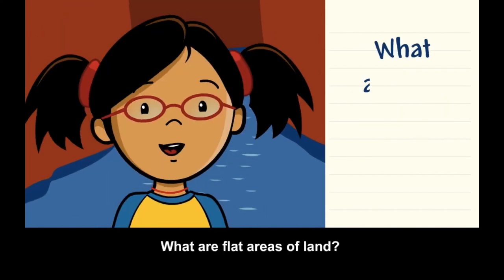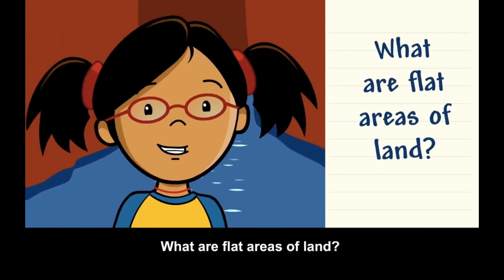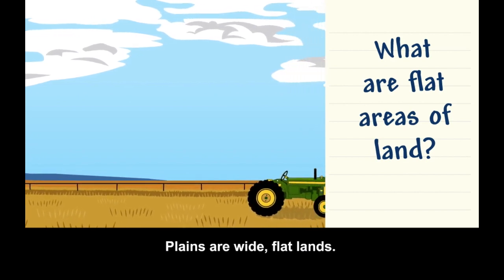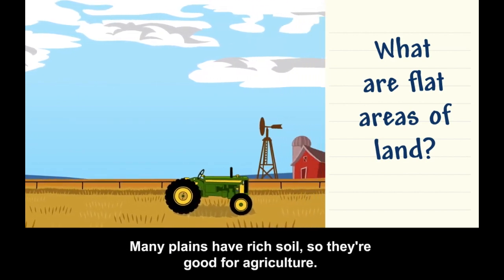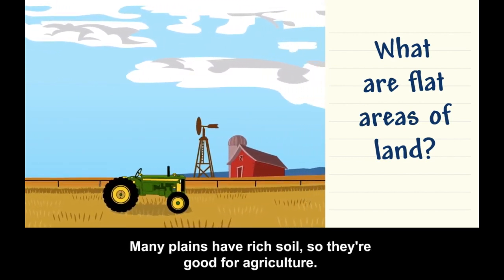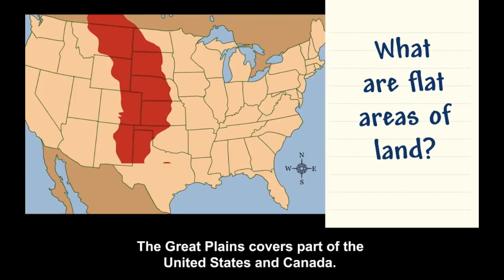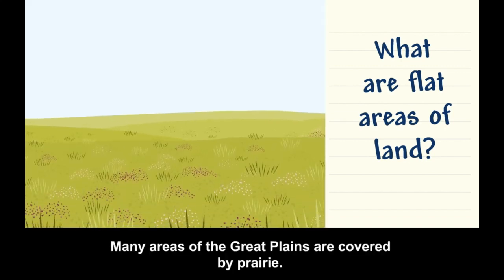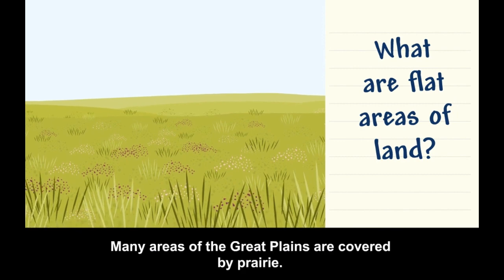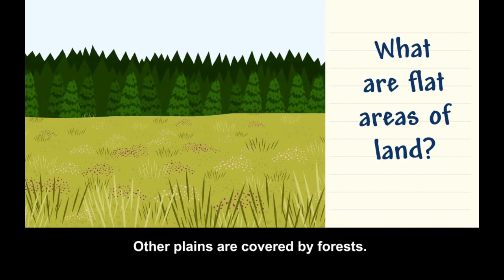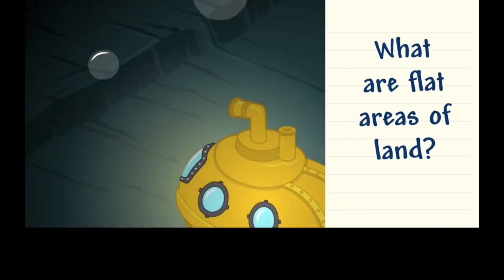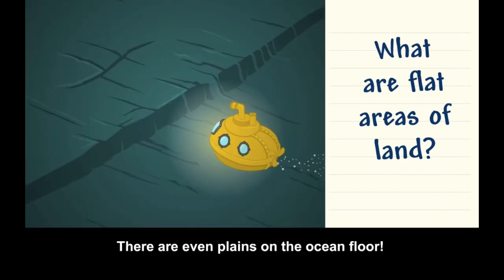What are flat areas of land? Plains are wide, flat lands. Many plains have rich soil, so they're good for agriculture. The Great Plains covers part of the United States and Canada. Many areas of the Great Plains are covered by prairie. A prairie is a grassy plain that has few or no trees. Other plains are covered by forests. There are even plains on the ocean floor.